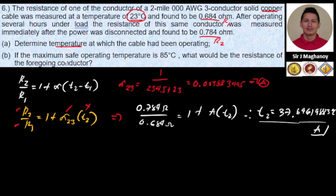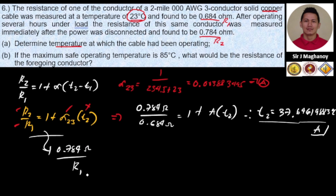For part B, if the maximum safe operating temperature is 85 degrees Celsius, what would be the resistance of the foregoing conductor? We still use the same formula, substituting R2 as 0.784 ohms and using the operating temperature found in part A. Now we solve for R1, the resistance at the new temperature condition, using our temperature coefficient alpha.